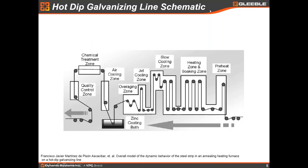This is a simple schematic of a hot dip galvanizing line. Most continuous annealing lines are actually part of a hot dip galvanizing line where we heat the steel, anneal the steel, and then coat the steel, all in the same line. It doesn't fundamentally change the continuous annealing section, but it does mean there is even more strip in the furnace. For galvanneal material, there's also a secondary heating process after the zinc bath, which can also be replicated in the Gleeble.